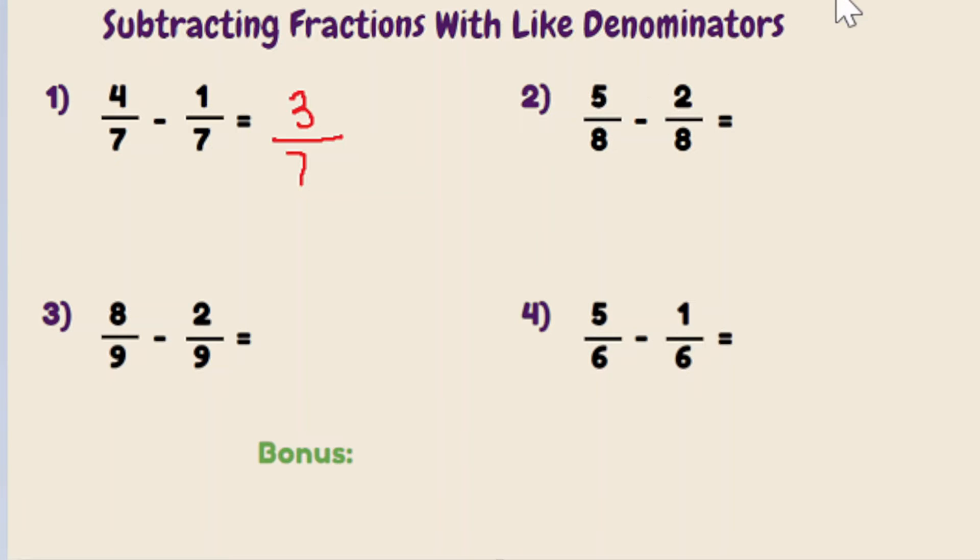Number two, what is 5 eighths minus 2 eighths? Step one, we subtract our numerators. 5 minus 2 is 3. Second step, keep your denominator the same. So 3 eighths is our answer. Do 3 and 8 share a common factor between the two of them? The answer is no. So 3 eighths is in simplest form.